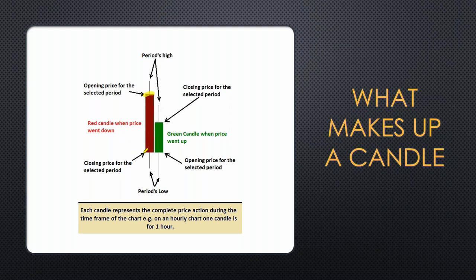At the close of that one hour, we put another line across. We put a dot at the highest point that price had gone in that one hour and a dot at the lowest price. We then connect the lines together and connect the lines to the dots. This gives us our candle. The area between open and close is known as the body of the candle, and the extensions are the wicks or shadows of the candle.